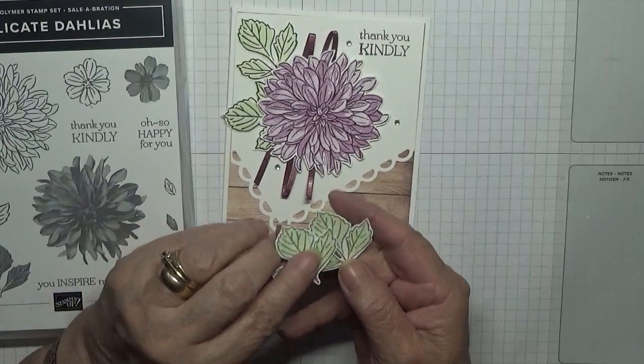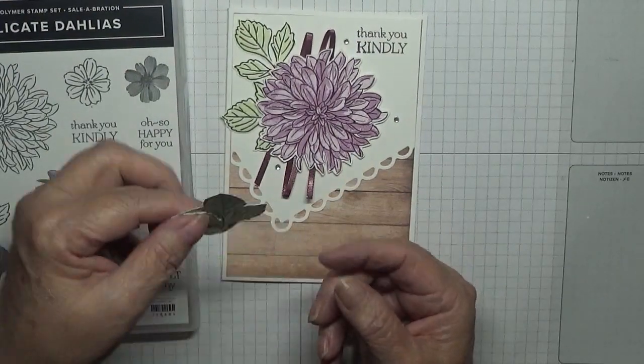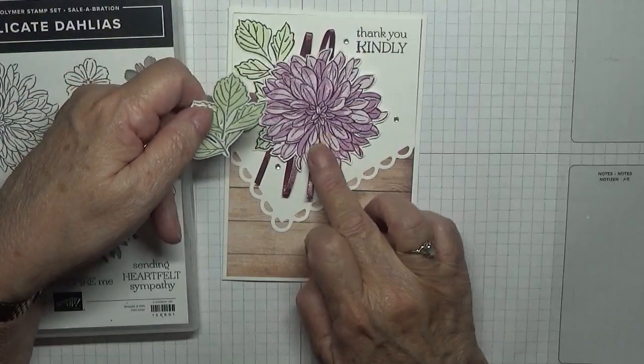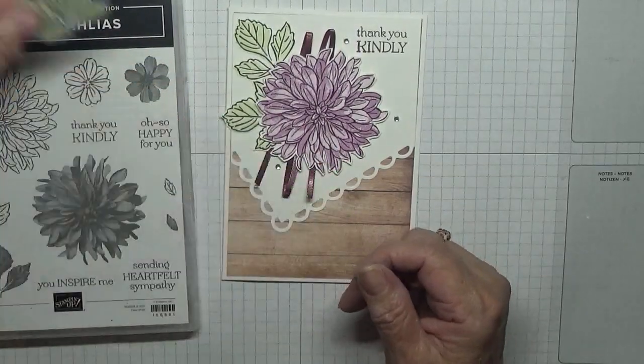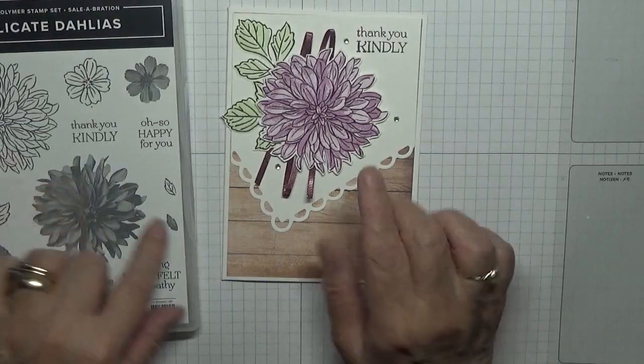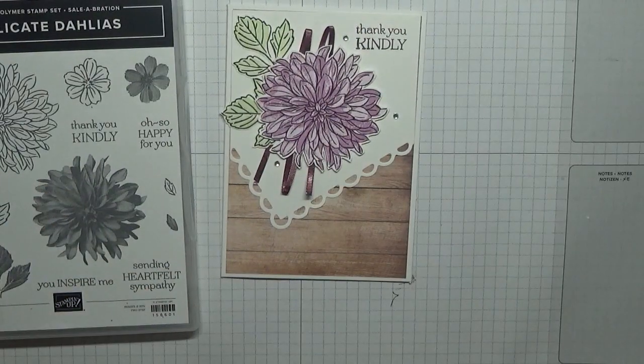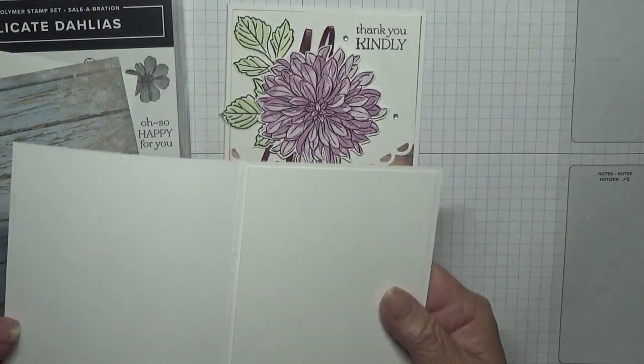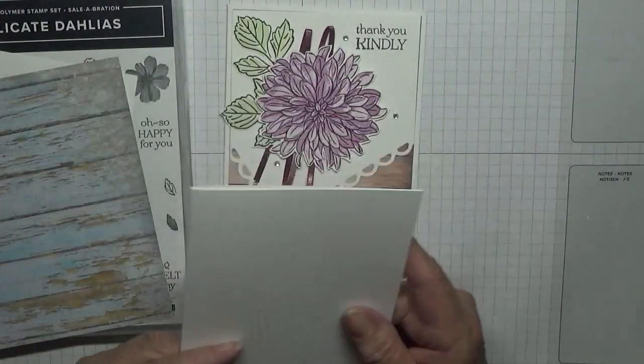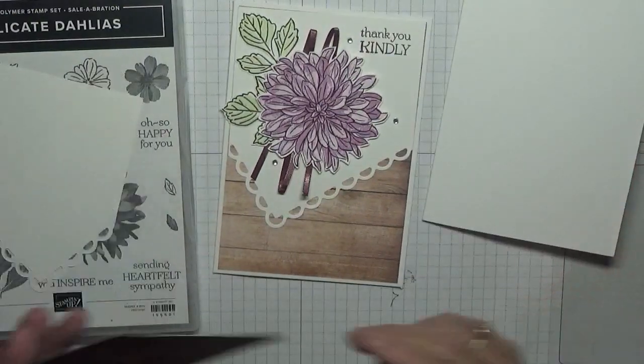So I've got two left over for today but I only stamped one flower. I have a card base of eight and a quarter by five and seven eighths scored at four and one eighth folded in half. I have a piece of blank paper, wooded paper.